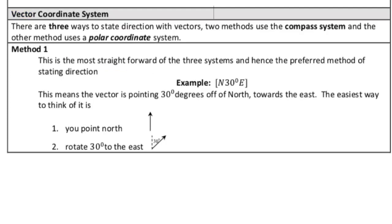When we talk about vectors, it always has a direction associated with it, but there are multiple standards for actually communicating that direction. We're going to be talking about the vector coordinate system. There are three ways. Technically, there's more than three. There's actually a fourth one, but we're not going to get too much into that. In physics, there are basically three ways. We use a compass system, and there are two versions of that, and a polar coordinate system.